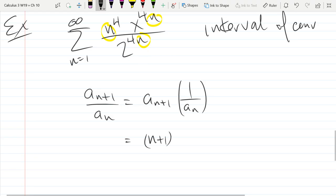We get n plus 1, next to the 4n plus 1, divided by 2 to the 4n plus 1. Now the reciprocal, that's just copy everything that's there, but reciprocate it.